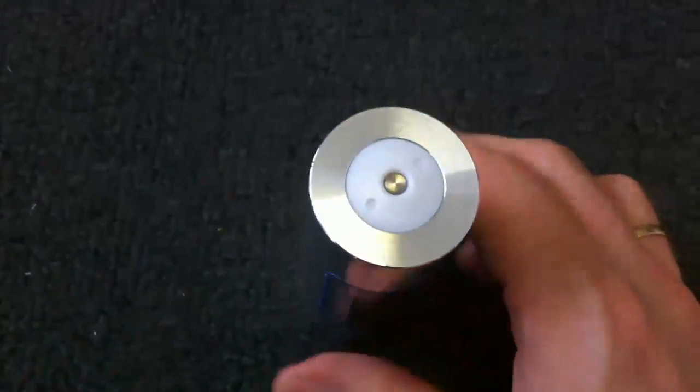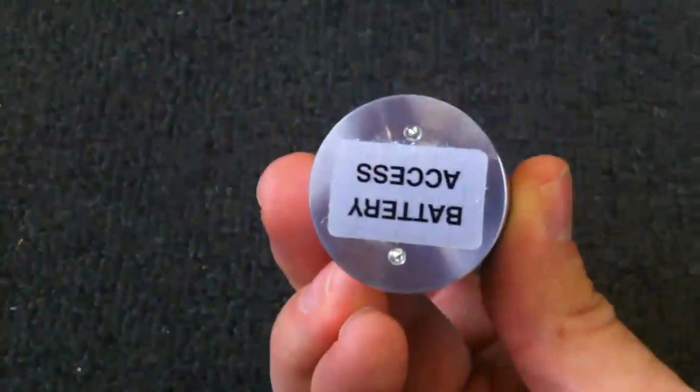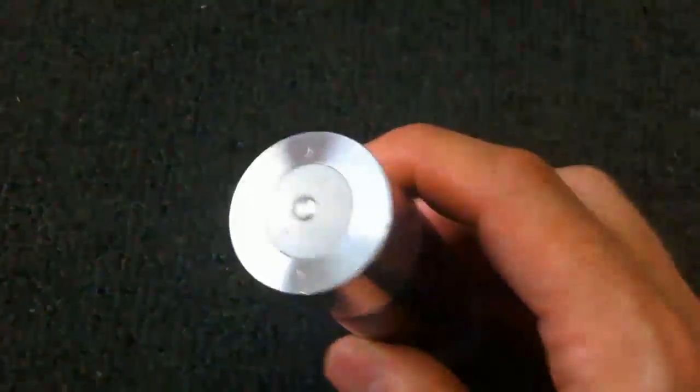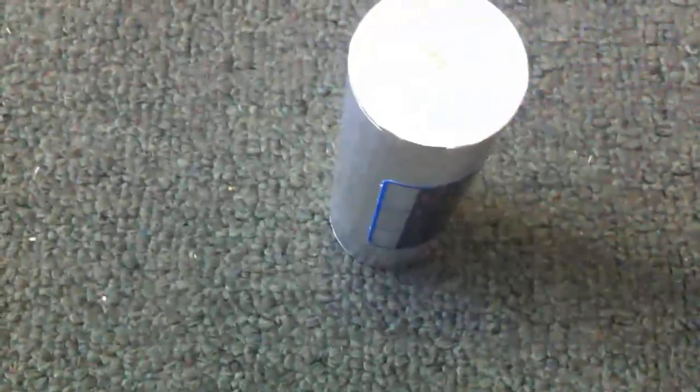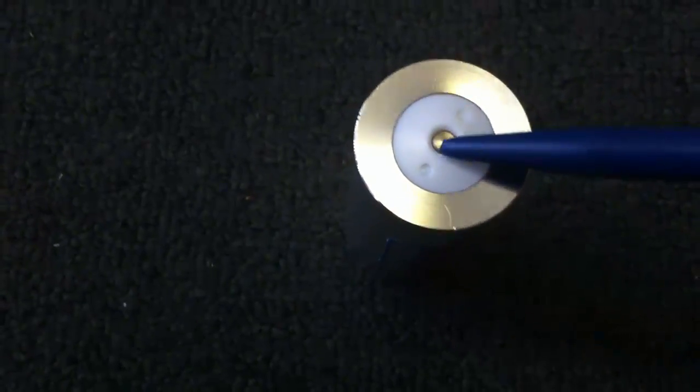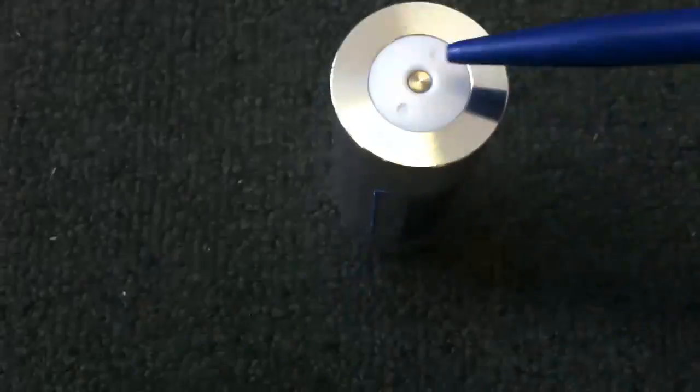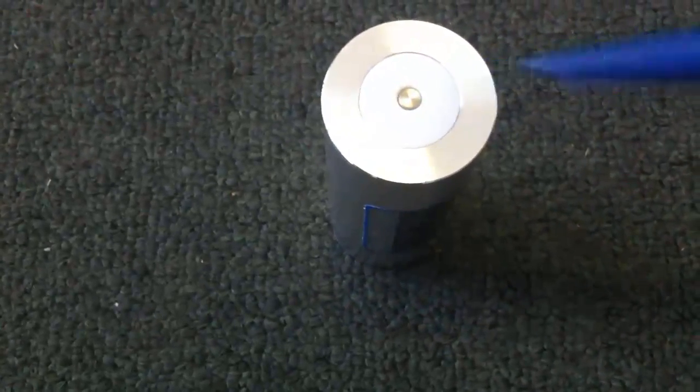So basically what we have here is the outer casing, and in here we have the battery terminal, and when the beacon goes into the water we get a bridge across here which activates it.